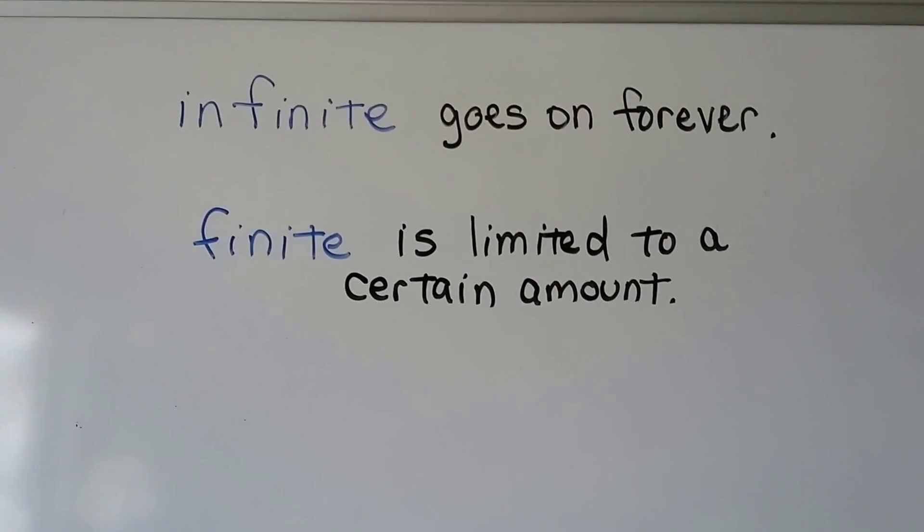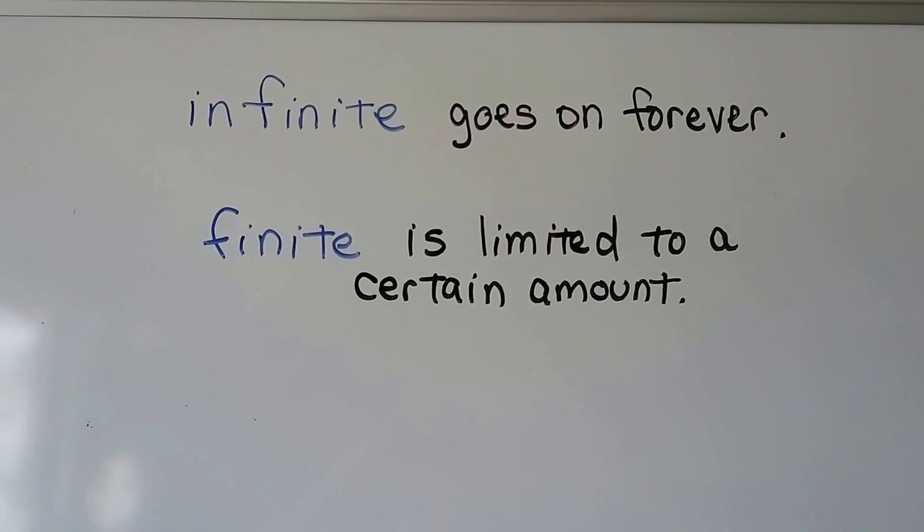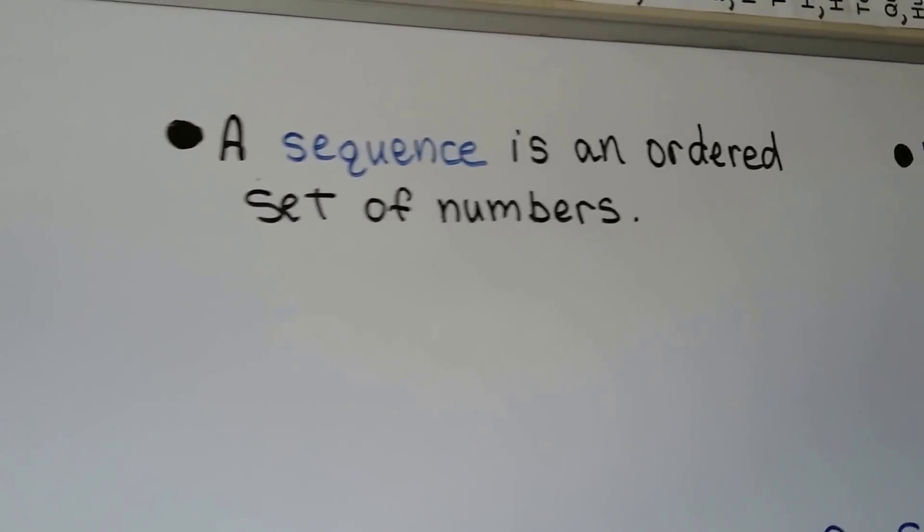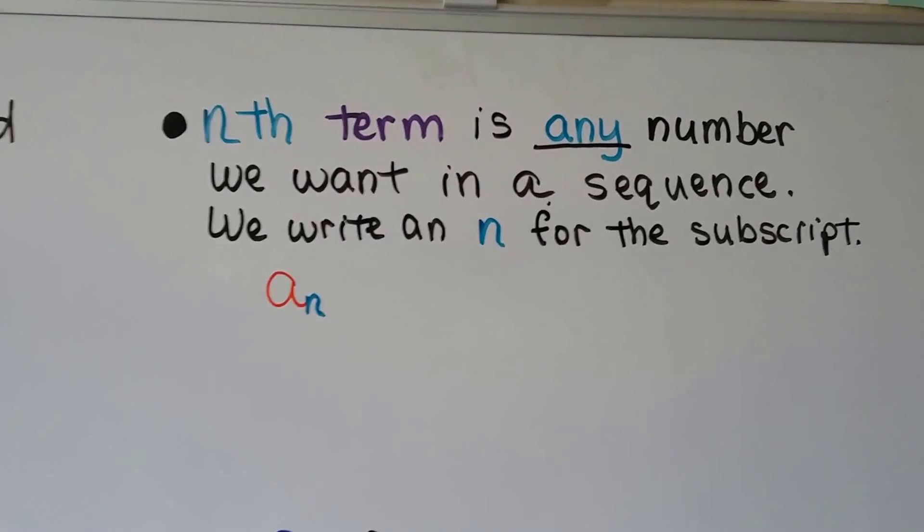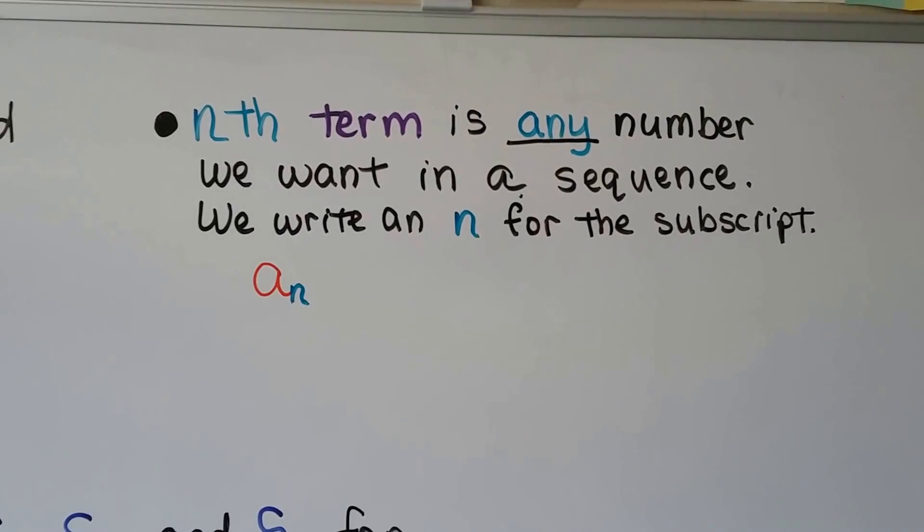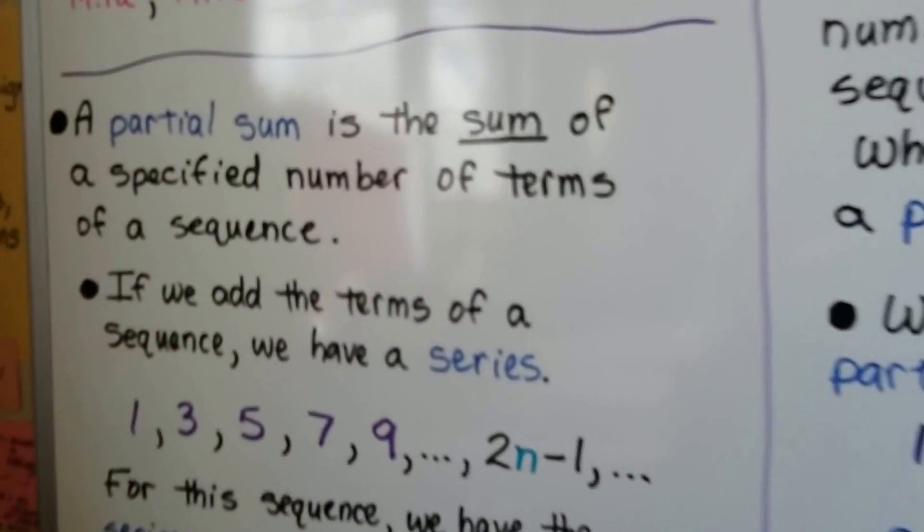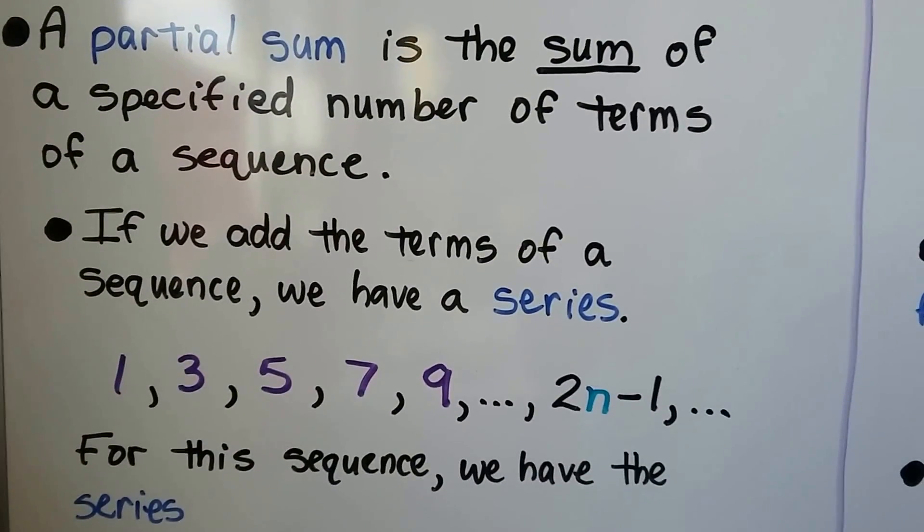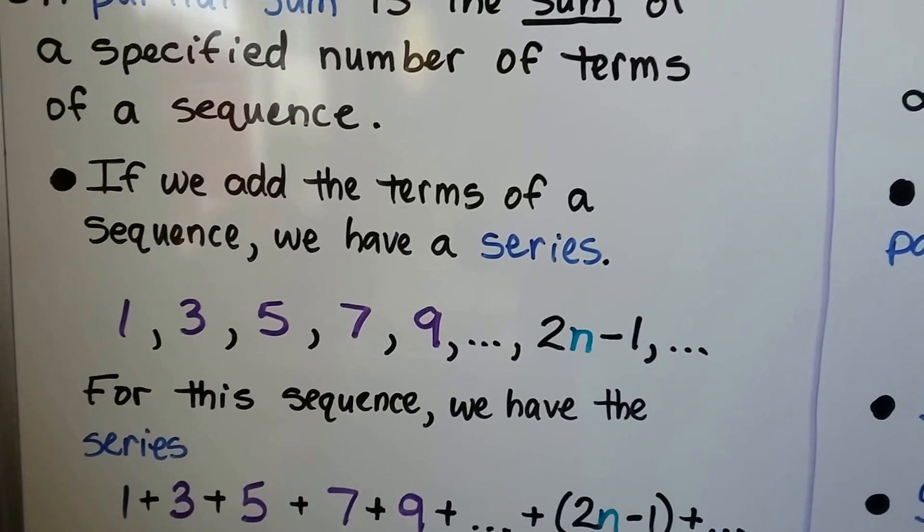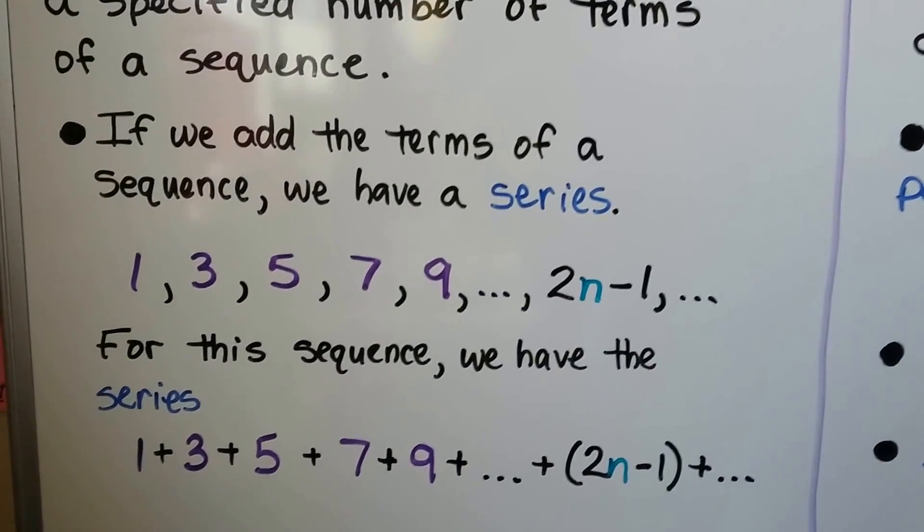My piggy bank holds a finite number of coins before it's full. A sequence is an ordered set of numbers, and the nth term is any number we want in a sequence. We write a_n, a sub n. A partial sum is the sum of a specified number of terms of a sequence. When we add the terms of a sequence, we have a series.